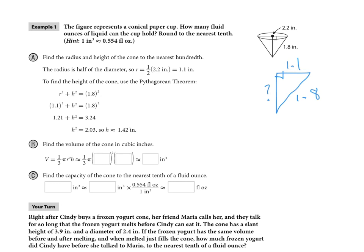Let's substitute in what we know. One-third πr²h is the volume formula. So one-third π, r is 1.1 squared, times h is 1.42. When we multiply all that out, including the π on our calculators, we get 1.80 cubic inches.